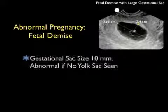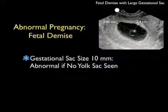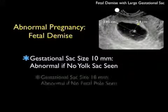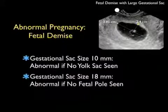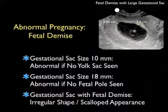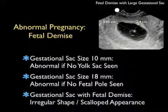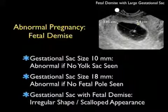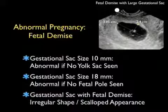While fortunately most pregnancies have a successful outcome, unfortunately there are going to be some abnormal pregnancies seen in the emergency department consistent with fetal demise. Some measurements used to determine abnormal pregnancy with fetal demise include a very large gestational sac greater than 10 millimeters if no yolk sac is seen. Once the gestational sac is greater than 18 millimeters, we should see a fetal pole, or else this is an abnormal pregnancy. Many times the gestational sac in an abnormal pregnancy will have an irregular shape with a scalloped appearance.